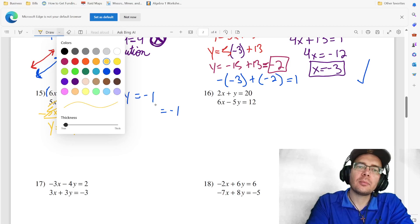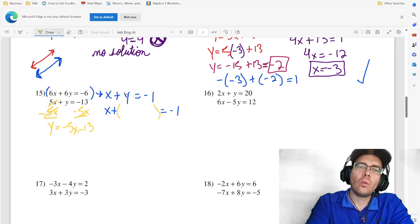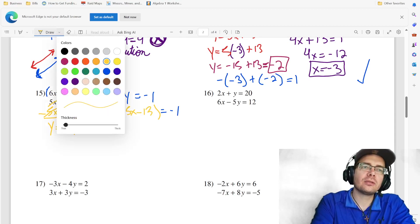And it's still going to be equal to negative one. So that's going to be y, which is equal to negative five x minus 13. And that is how substitution works.